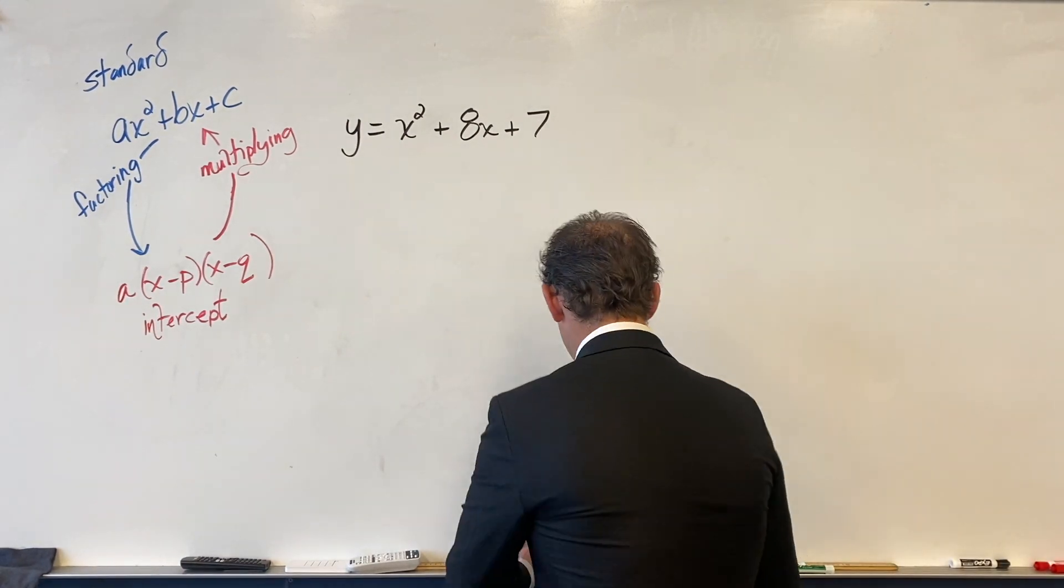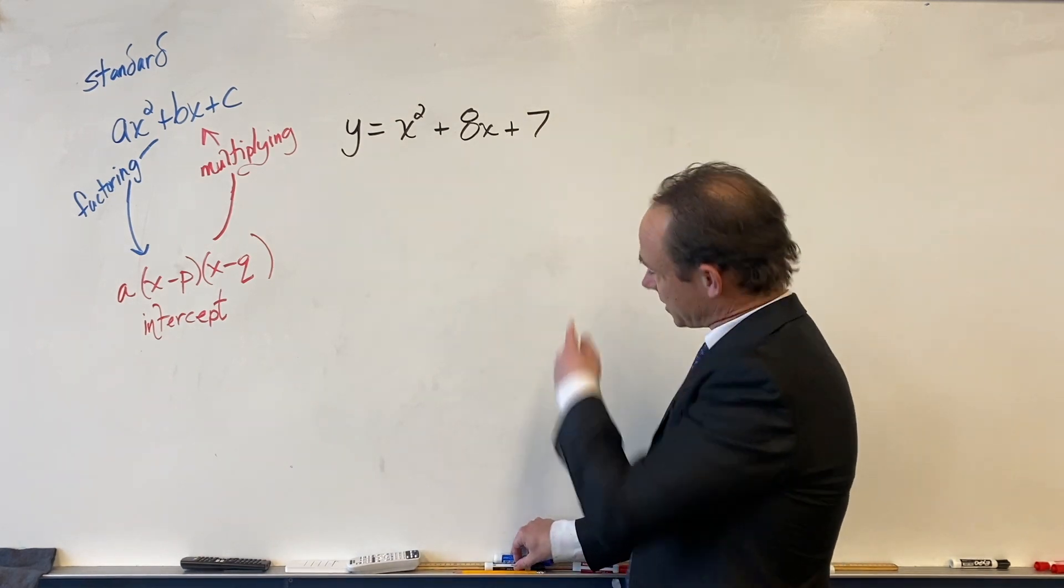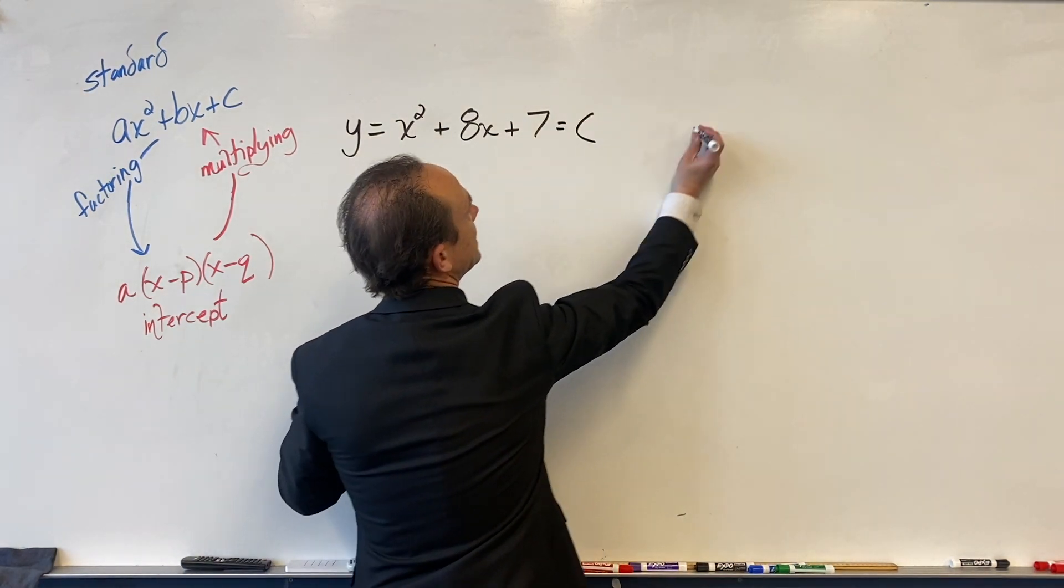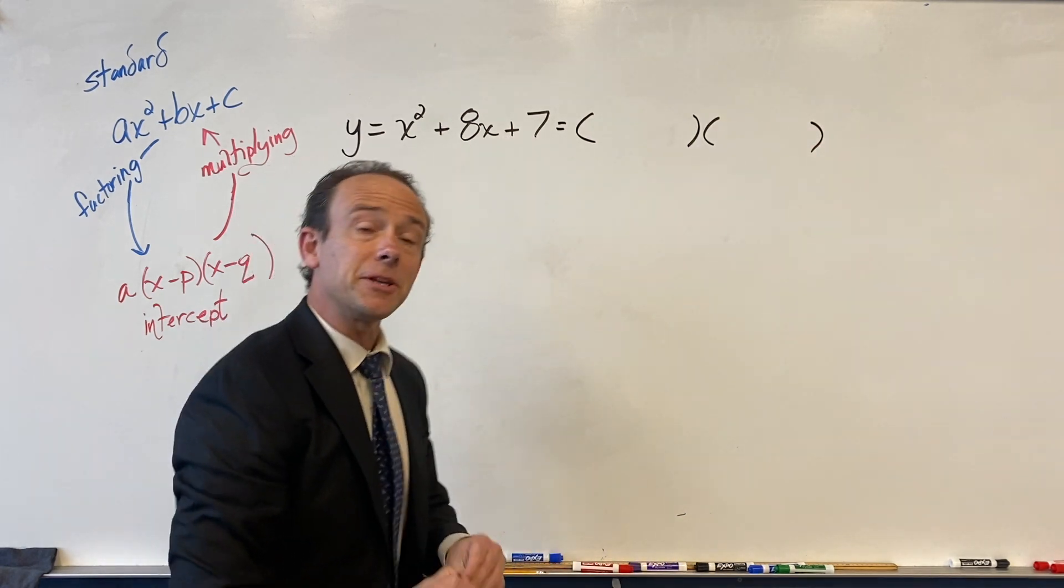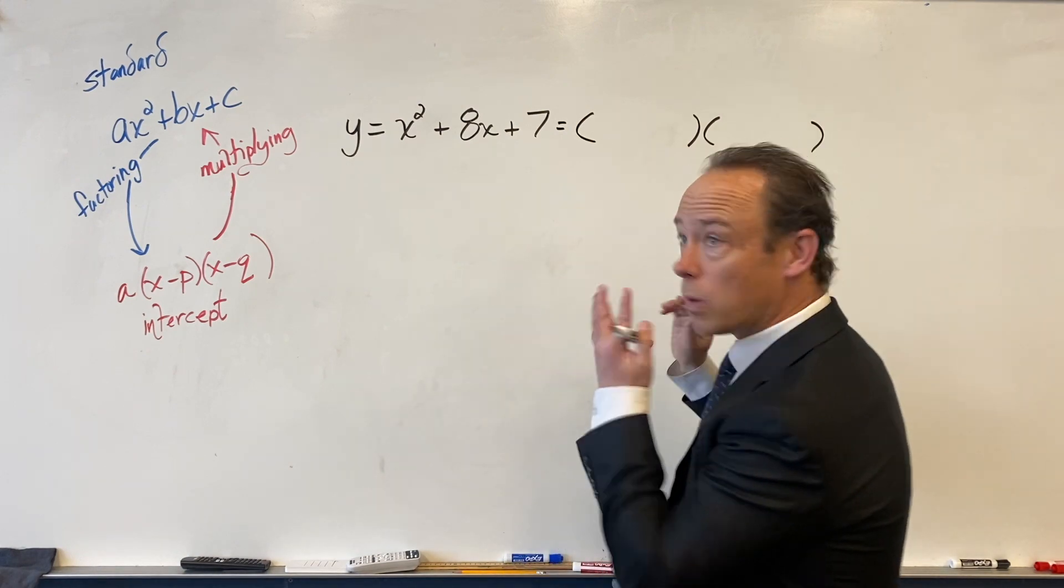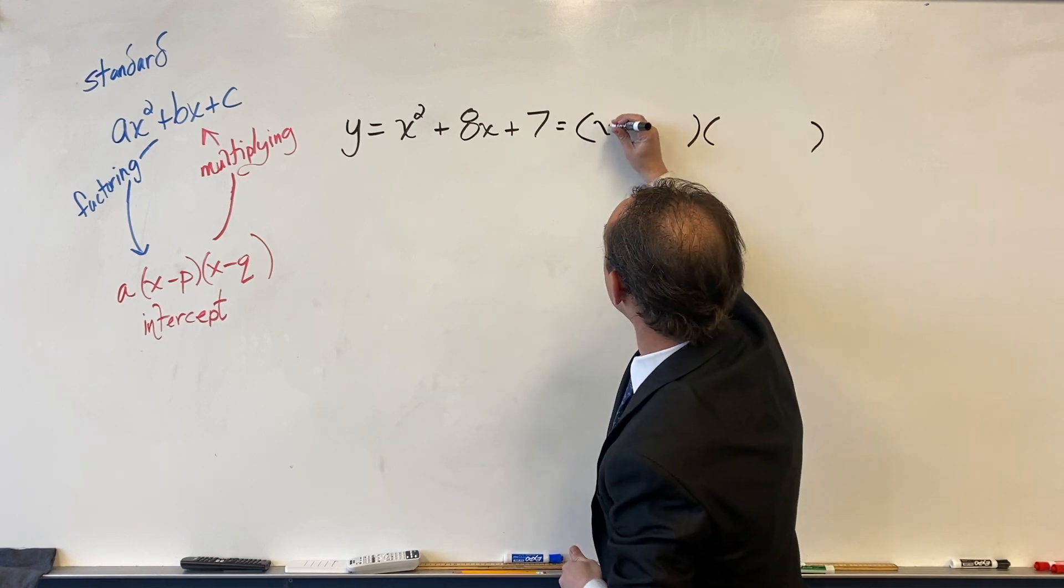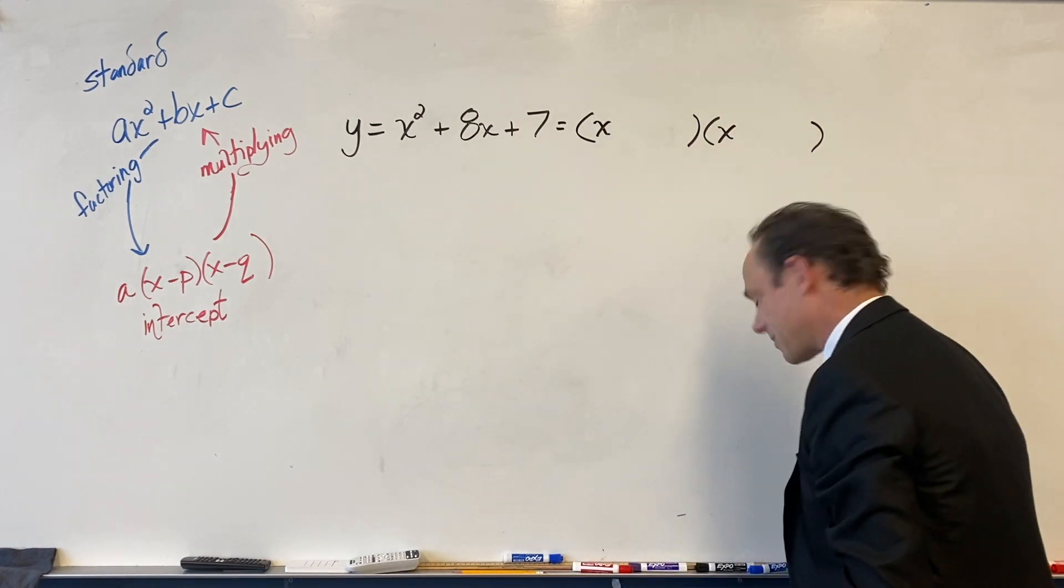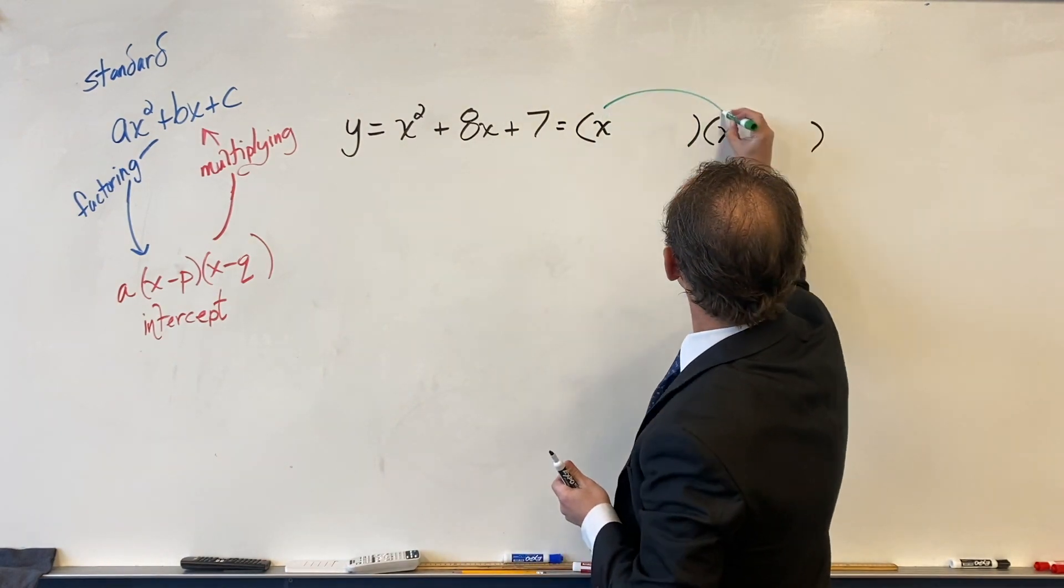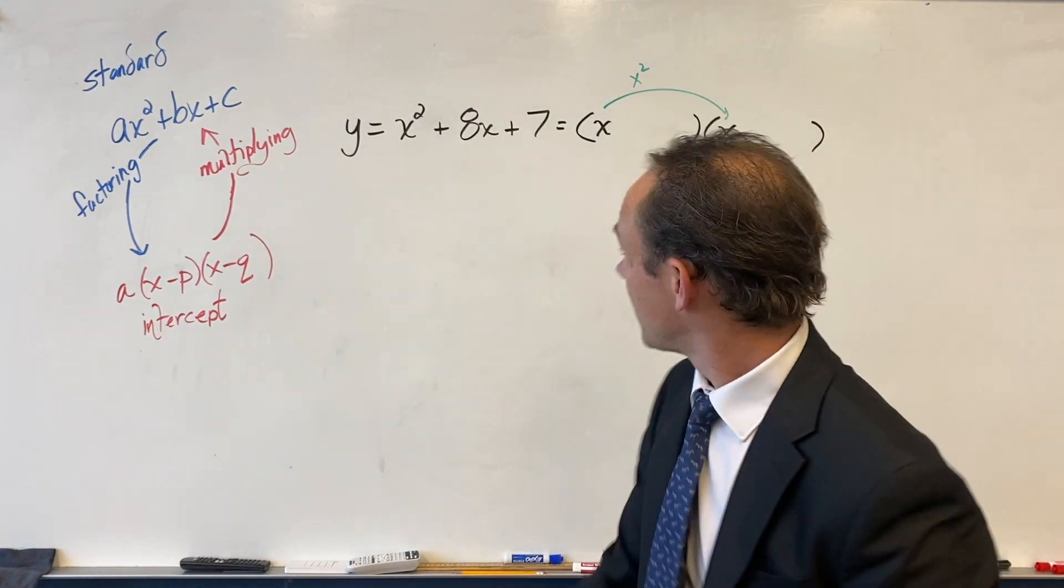Okay, so first thing I'm going to do is say all right, I know what intercept form looks like - it's a factored version of standard form. I'm going to use the guess and check model for factoring. I know that this term and this term are going to get me that x squared, so I'm just going to line up x right there.